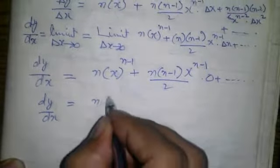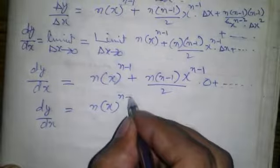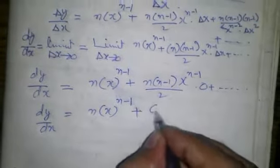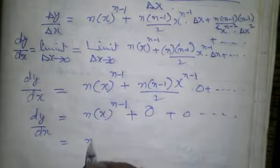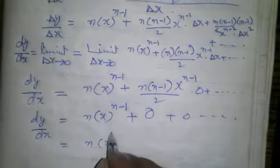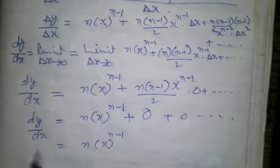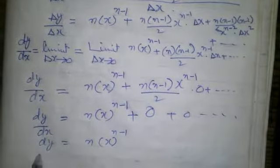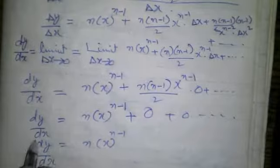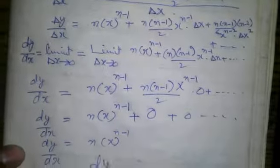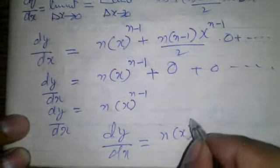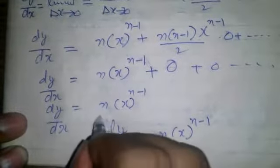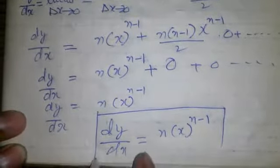Applying the limit, dy by dx is equal to n times x to the power n minus 1, plus 0 plus 0 plus 0 and so on, which equals n times x to the power n minus 1. So dy by dx equal to n times x to the power n minus 1 is the required answer.